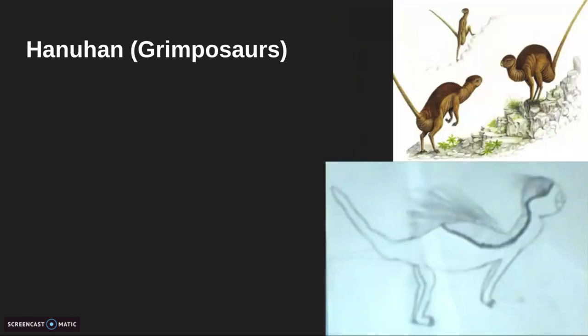Next, I have the Hanuhan or the Grimpasaurus. I made this just more updated to what we know hypsilophidons look like now. I still had the upwards tail, but not as extreme as this thing. I just have it like this. I have them semi-bipedal. Some feathers like that. Some on the head, some bordering. And some feathers on the head and the back. As we know, Heterodontosaur, as a close relative, did have those.